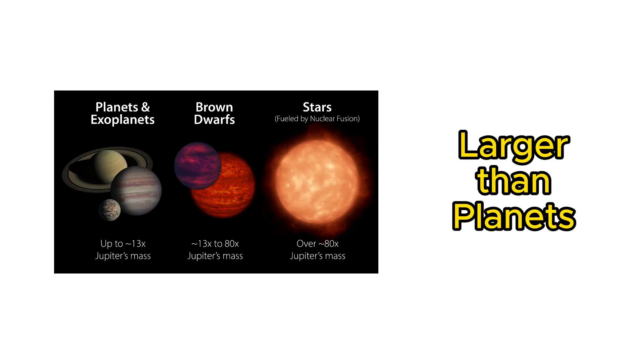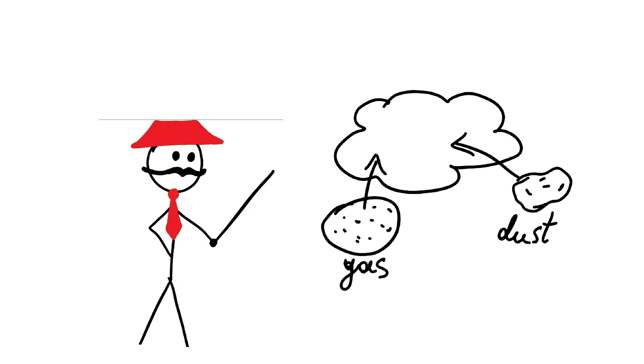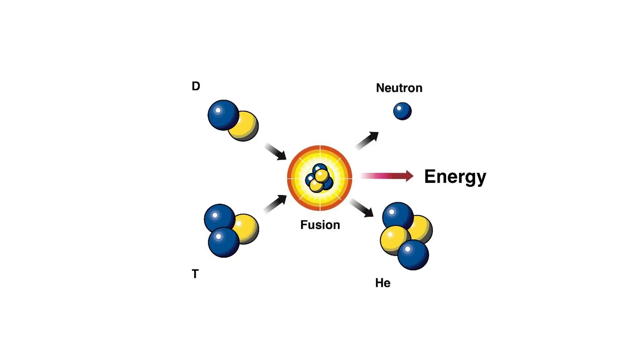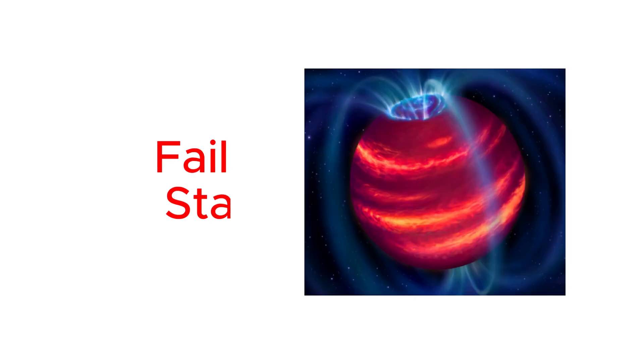Brown dwarfs are celestial objects that are larger than planets but smaller than stars. They form similarly to stars from collapsing gas and dust clouds, but they lack enough mass to sustain nuclear fusion like stars do. As a result, brown dwarfs are often called failed stars.